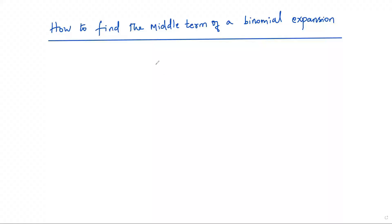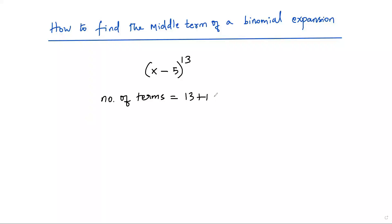Now let's look at another example: (x − 5) to the power of 13. I want to find the middle term of the expansion of this binomial. First, I have to find the number of terms. Number of terms equals 13 plus one — we add one to the exponent — so the expansion of this binomial will contain 14 terms.